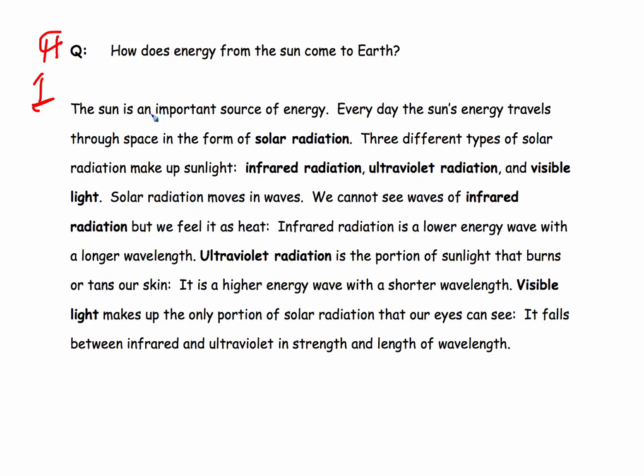The sun is an important source of energy. Every day the sun's energy travels through space in the form of solar radiation. Three different types of solar radiation make up sunlight: infrared radiation, ultraviolet radiation, and visible light.